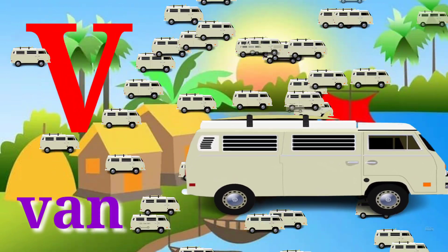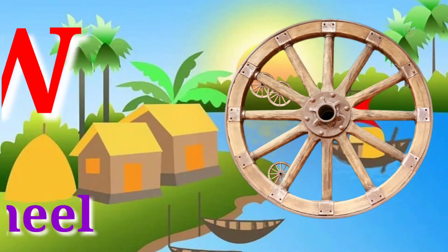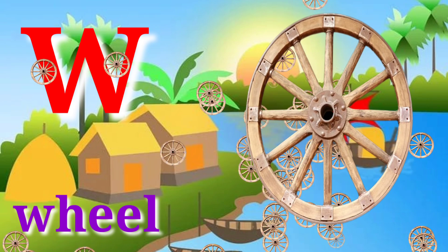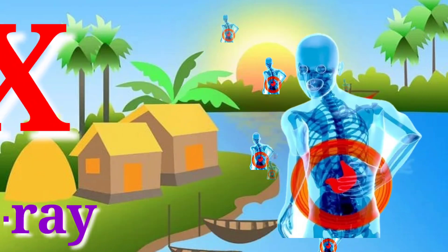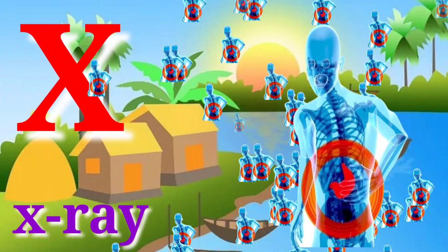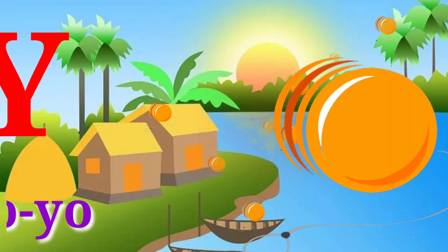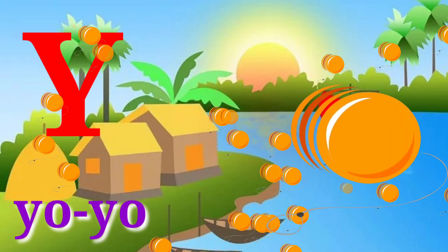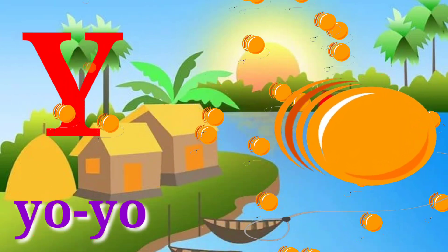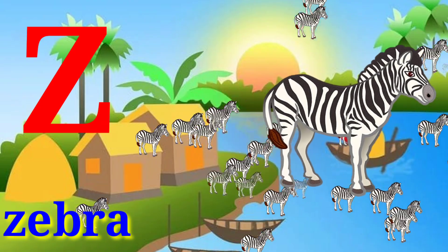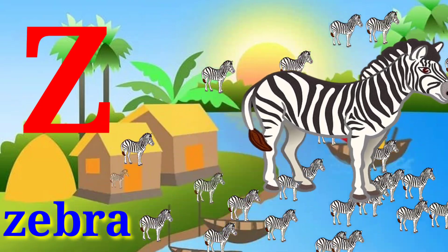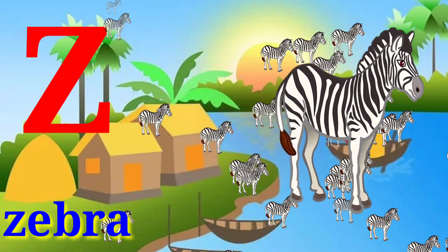V for van, W for whale, X for x-ray, Y for yoyo, Z for zebra. Bye bye!